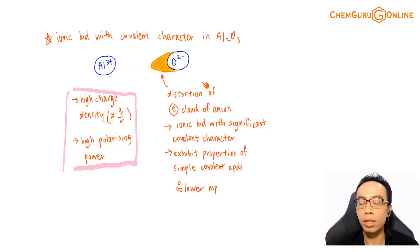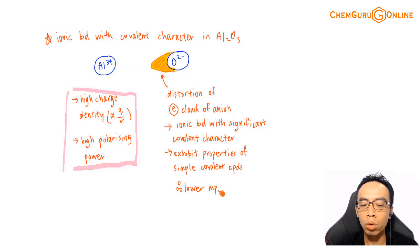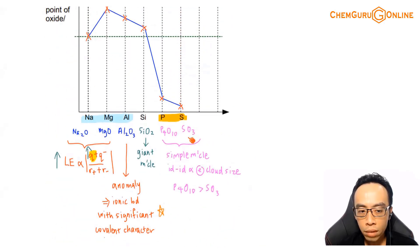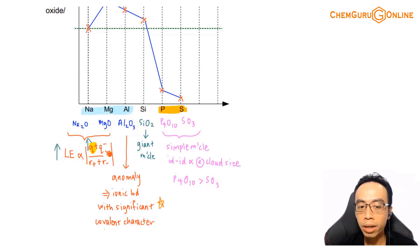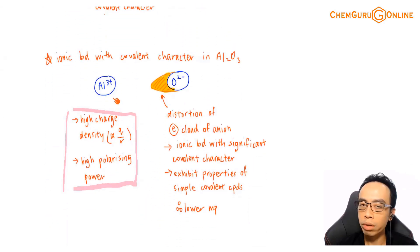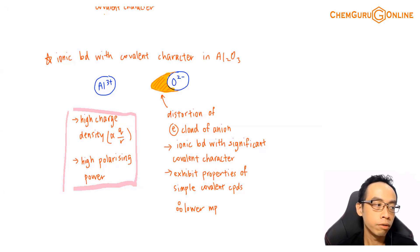If there is a greater distortion of electron cloud, there will be significant covalent character, and this compound will start to exhibit properties of a simple molecule, referencing a lower melting point. This is the reason why Al₂O₃ has a lower melting point than magnesium oxide. If it obeys lattice energy, that's the default concept and the general trend. If it doesn't, our backup plan is to invoke ionic bond with significant covalent character — Al³⁺ has high charge density, high polarizing power, and can distort the electron cloud of O²⁻ significantly, so Al₂O₃ has ionic bond with significant covalent character and therefore a lower-than-expected melting point.